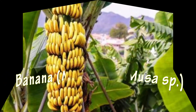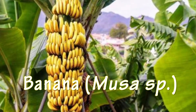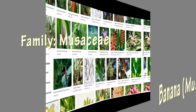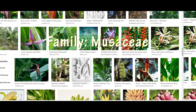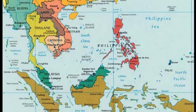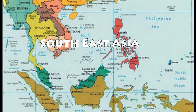Banana, scientifically known as Musa species, belongs to the plant family Musaceae, which includes plants with banana-like characters. Uses range from ornamental to fruit. The origin of banana is considered to be Southeast Asia, especially Papua New Guinea.